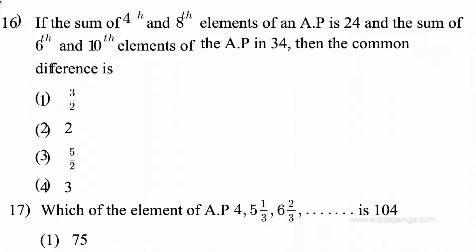The 16th question is like this: if the sum of the 4th and 8th elements of an AP is 24 and the sum of the 6th and 10th elements of the AP is 34, then find the common difference. It's a simple question.